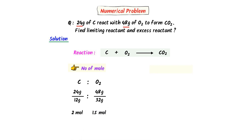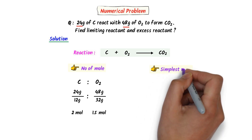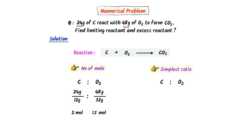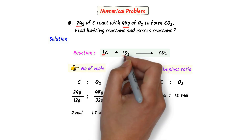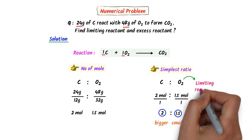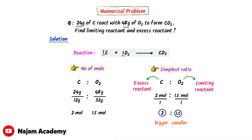Thus, in the first step, we calculated the number of moles. In the second step, we calculate the simplest ratio between carbon and oxygen gas. The number of moles of carbon is 2 moles and that of oxygen gas is 1.5 moles. To find the simplest ratio, I divide the number of moles by the stoichiometric coefficient. The stoichiometric coefficient of both carbon and oxygen is 1, so I get 2 moles and 1.5 moles. Oxygen gas has the smaller ratio, so oxygen gas is the limiting reactant and carbon is the excess reactant.